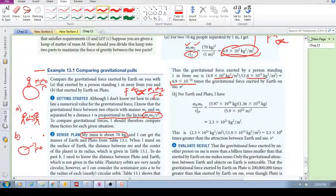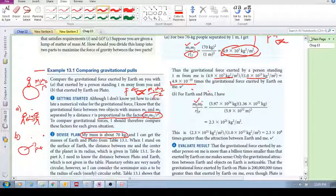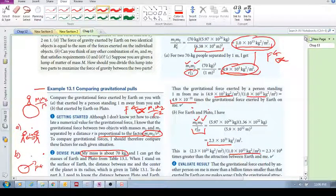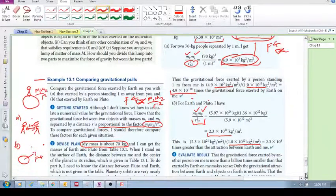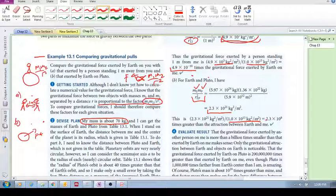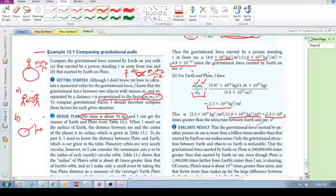And then we can also do it between Earth and Pluto. There's the mass of earth, the mass of Pluto, divided by the square of the radius: 2.3 times 10 to the 21. Again, we take that and we divide it by the one that we calculated between you and earth. And we see that the gravitational force between earth and Pluto is 2.3 times 10 to the 8 times greater than earth and you.